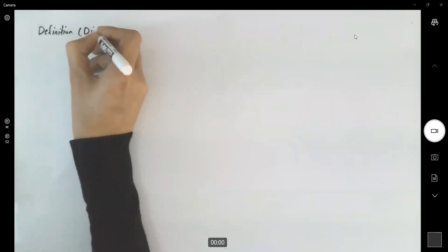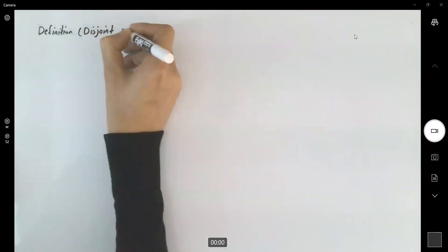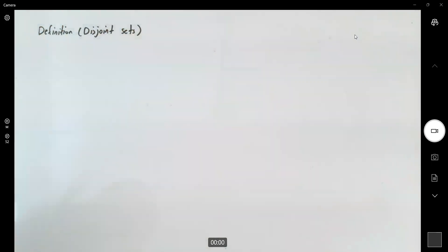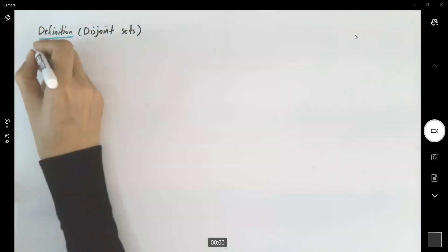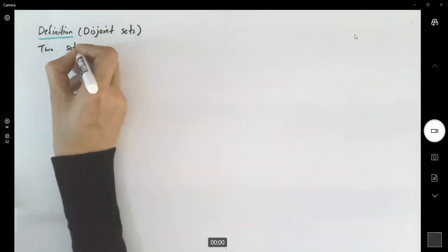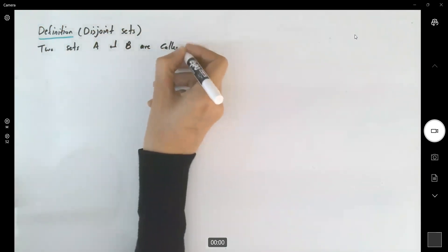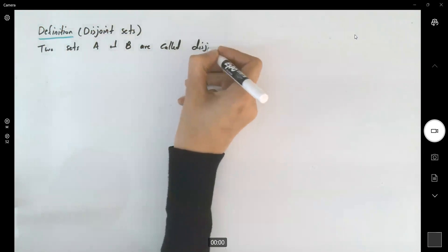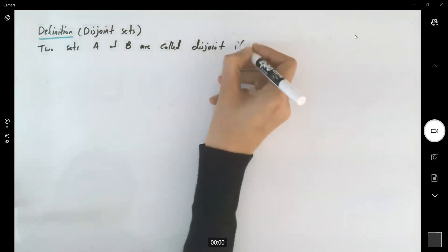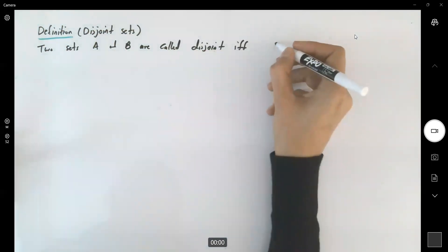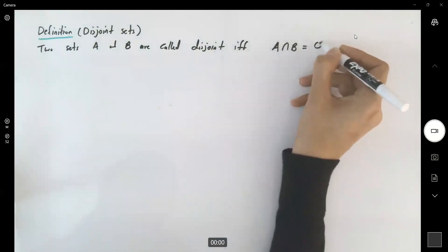Definition of disjoint sets. Two sets, like A and B, are called disjoint if and only if they have nothing in common. A intersection B is empty.